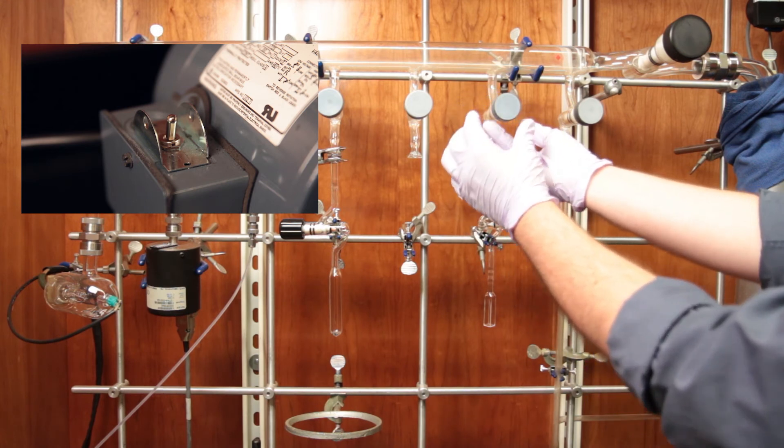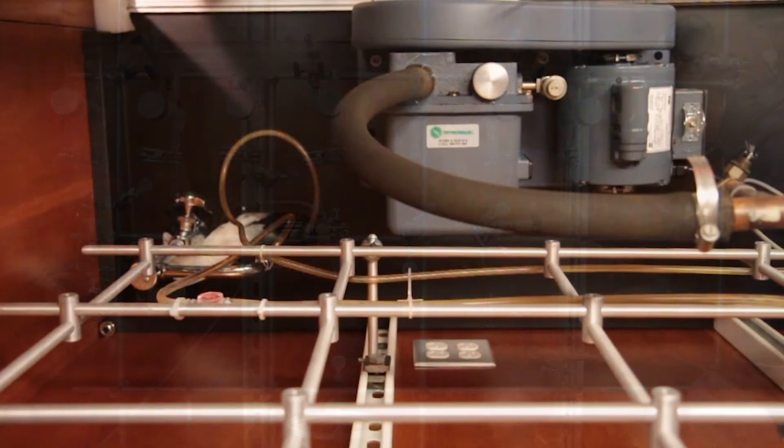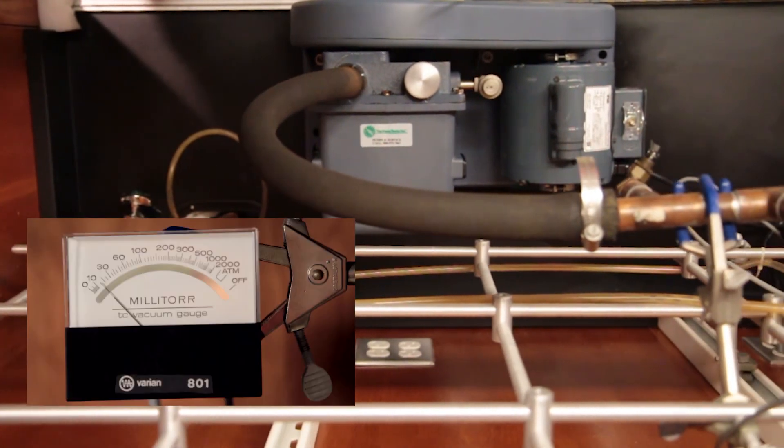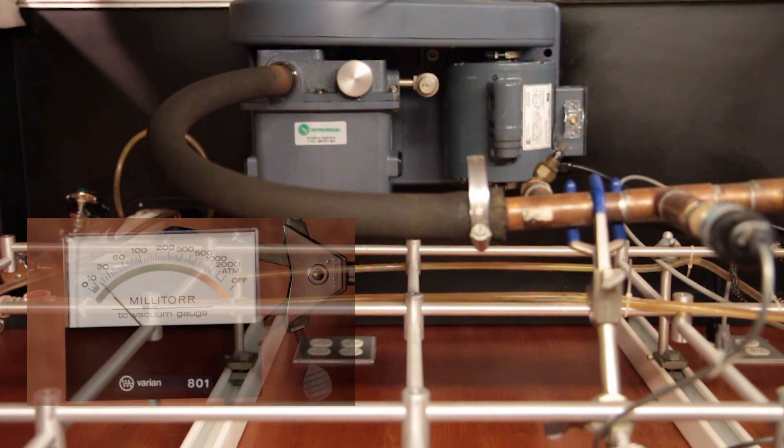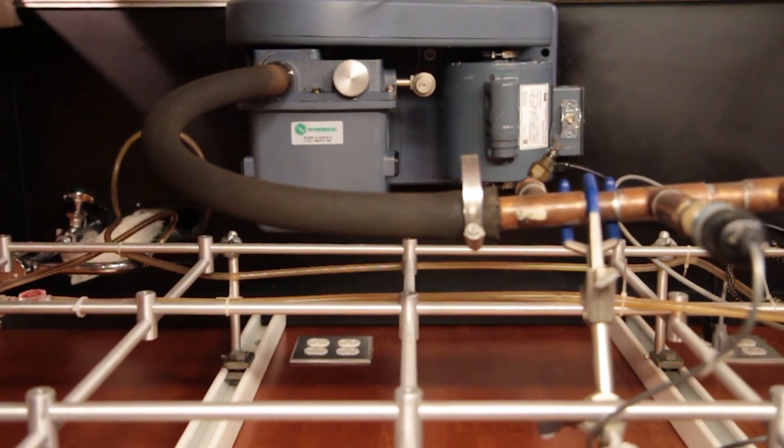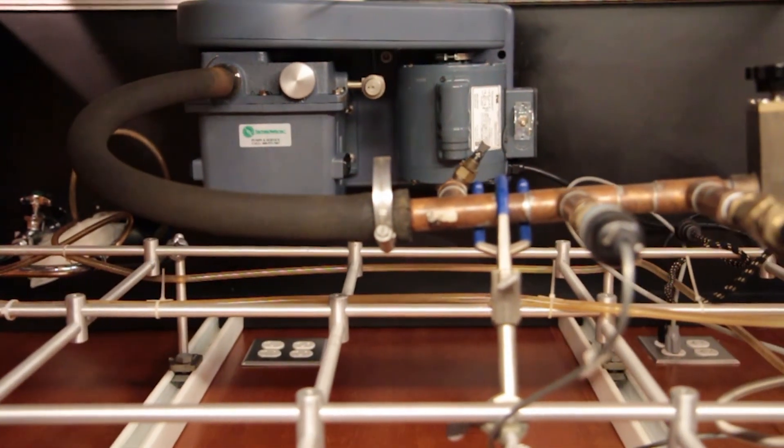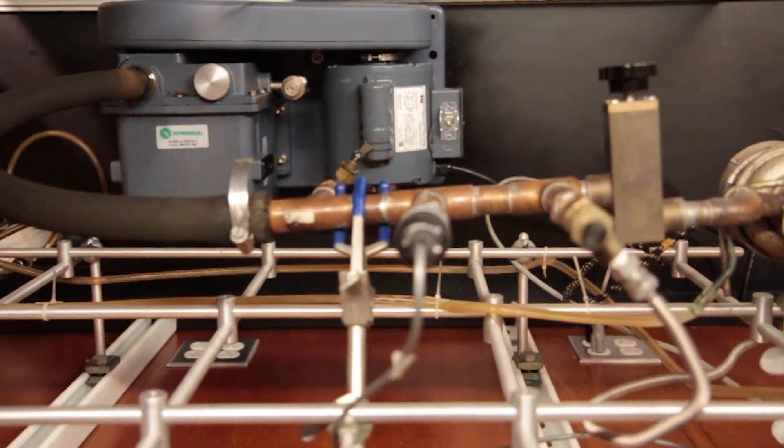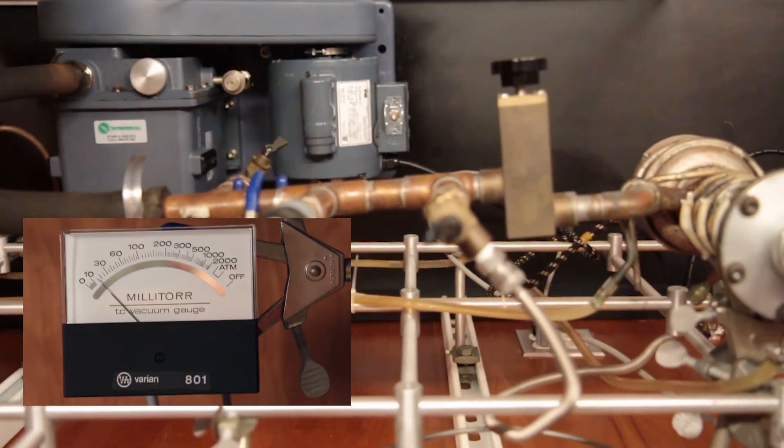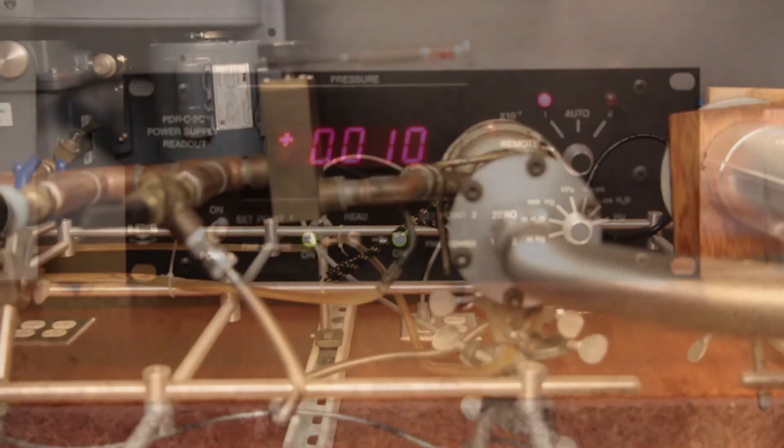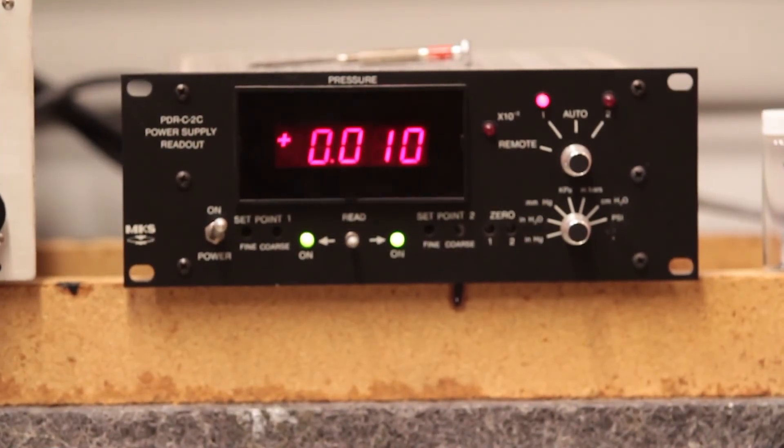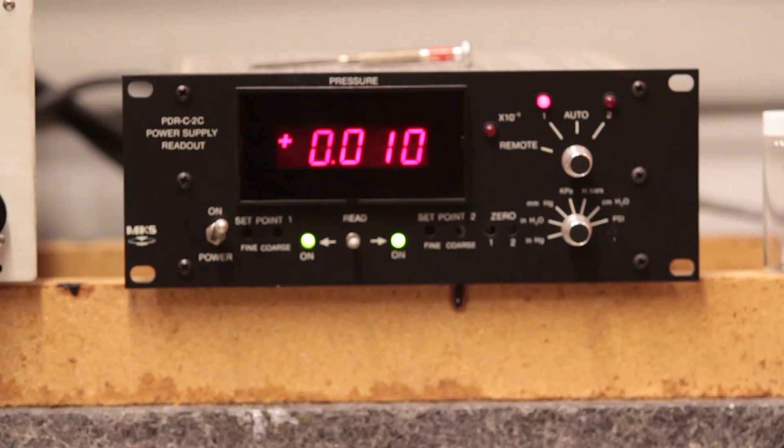The rotary vane pump will bring our pressure down to less than 100 millitorr, which is sufficient to start the diffusion pump. This vacuum gauge is connected near the diffusion pump and is used to make sure the working pressure is always low enough that the diffusion pump functions properly. We have a second vacuum gauge that is connected directly to the manifold. We'll use this gauge to monitor the pressure of the gas that we're putting into our sample cell.